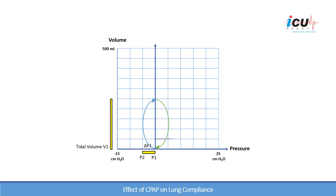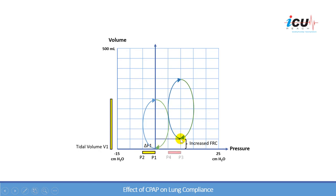Now, the second case: let's apply a CPAP of 10. We'll start inspiration from a CPAP of 10. With applied pressure into the lung, the lungs will be recruited, so the functional residual capacity will be increased. This patient will be breathing on a larger functional residual capacity compared to the first case. The pressure will be dropped from P3 to P4 — in this case, from 10 centimeters to 5 centimeters when the patient inhales.